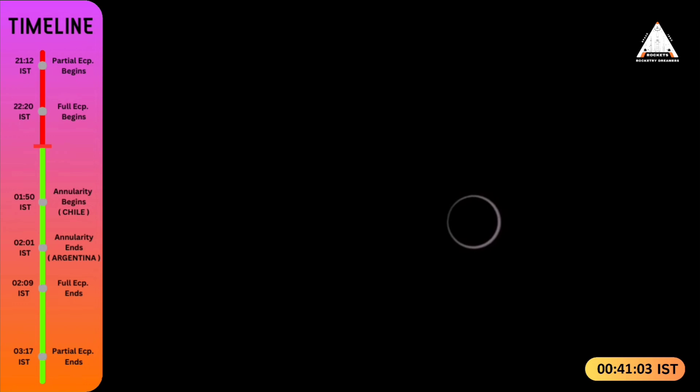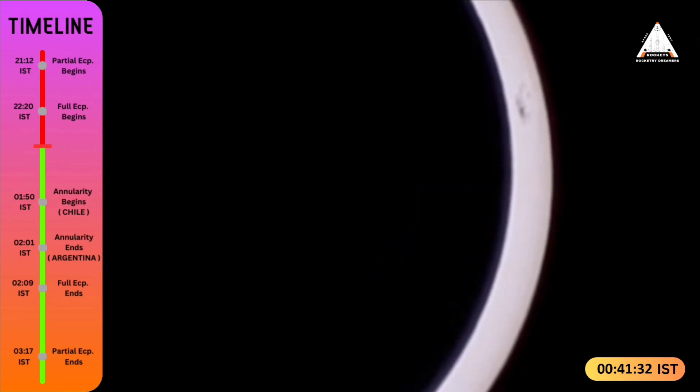You can see annularity here in Easter Island in the Pacific currently. Annularity is at its max. You can see it's 41 hours IST passed.